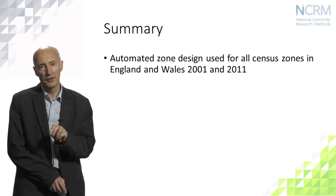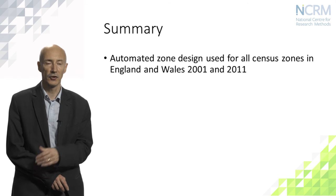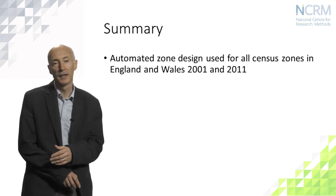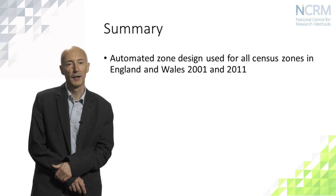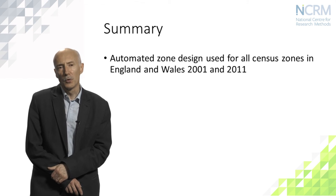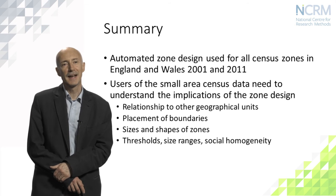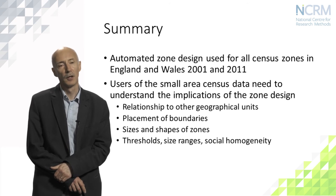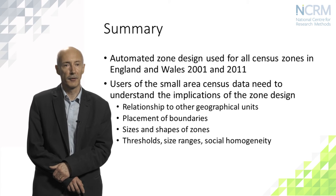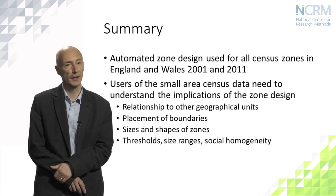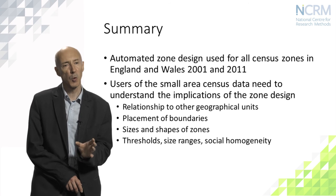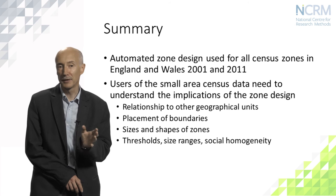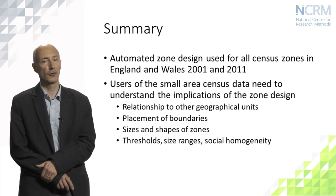In summary, the automated design processes discussed in these videos have underpinned all of the census zones used in England and Wales in 2001 and 2011, and also appear in some census outputs in Northern Ireland and Scotland, particularly the workplace geographies for 2011. All research users of the small area census data need to understand the implications of those zone design processes on the data they're using. In particular, the design has a strong bearing on the relationship to other geographical units. These zones will all match perfectly to local government geography and quite closely to small area postal geography, but may not closely match other units of interest such as electoral geographies.